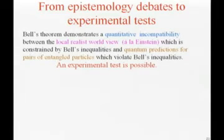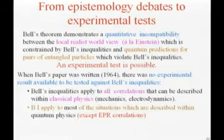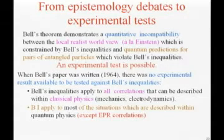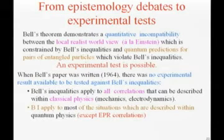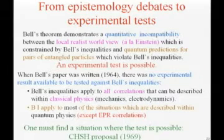It is time to go to experiment. Bell has shown us that an experimental test is possible. When Bell's paper was written, there was no experimental result available to be tested against Bell's inequality. What is surprising is that not only any situation describable with classical physics obeys Bell's inequality, but most situations we think should be described by quantum mechanics also obeys Bell's inequality. You must look for a very specific situation where the test is possible, and this was proposed a few years later by Clauser, Horn, Shimony, and Holt.